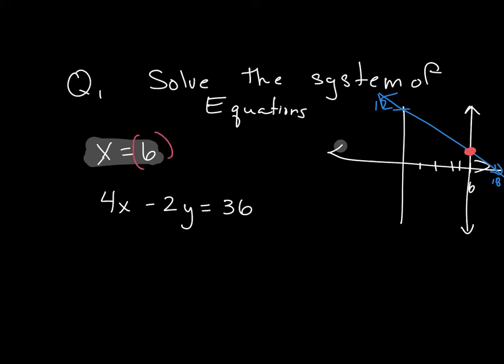So now I have 4 times 6 minus 2y is equal to 36.